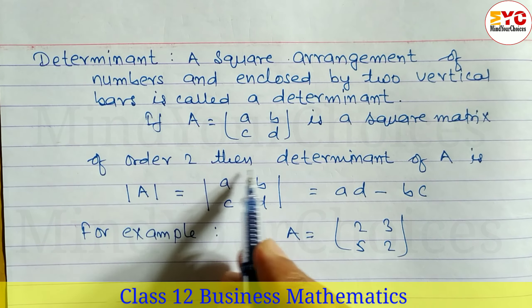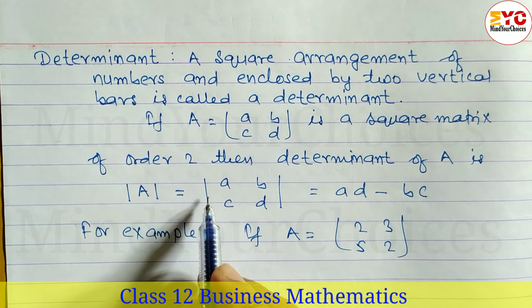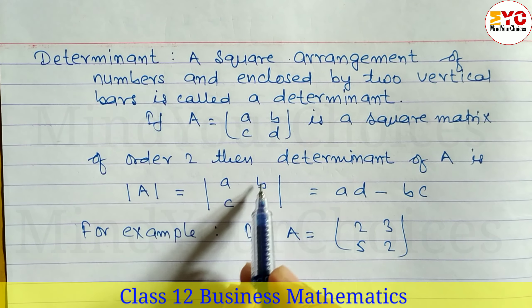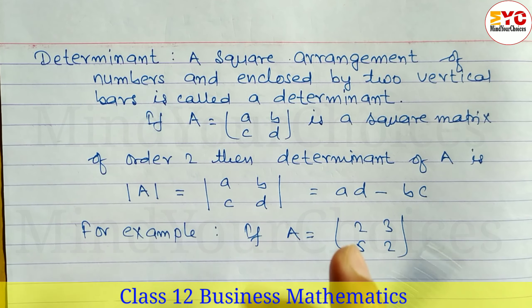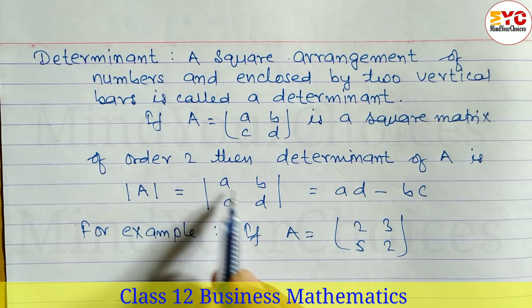If A = (a b; c d) is a square matrix of order 2, then the determinant of A is denoted by vertical bars enclosing the elements of matrix A.